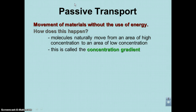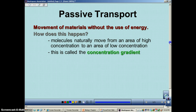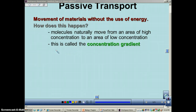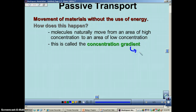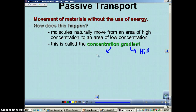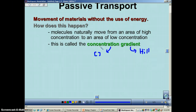It happens naturally because you're using what is called a concentration gradient. We're going to use brackets to mean concentration. The word gradient just means hill. Concentration refers to the concentration of a solute — something that is dissolved in a solution. Brackets are used as the symbol for concentration. Here's how we would draw a concentration gradient.